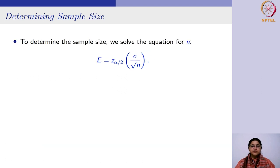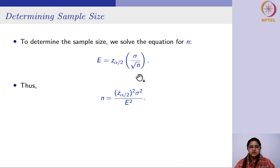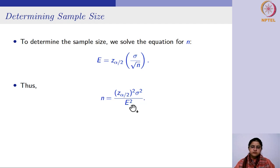If you know z_{α/2}, σ, and E, you can substitute and find the required sample size. However, σ — the population standard deviation — is often not known to us. So we can use an approximation that arises from the empirical rule, which we studied earlier: 95% of observations lie between μ ± 2σ, and 99.7% lie between μ ± 3σ.